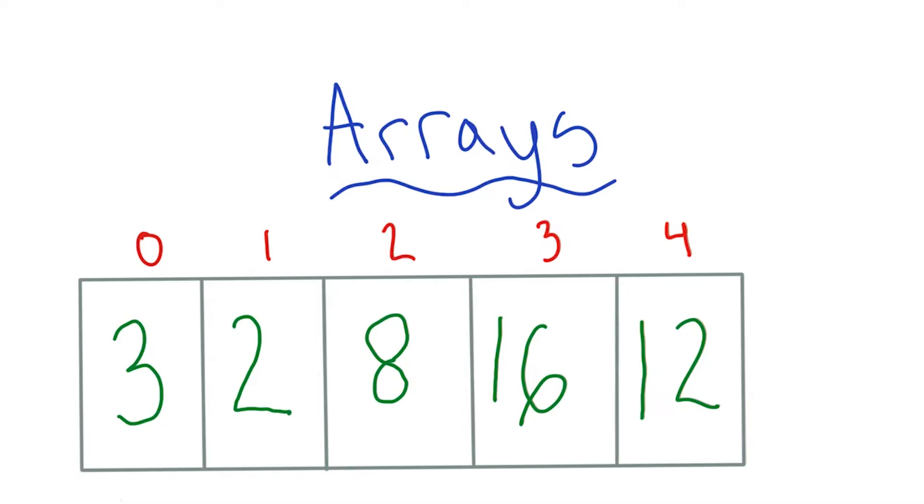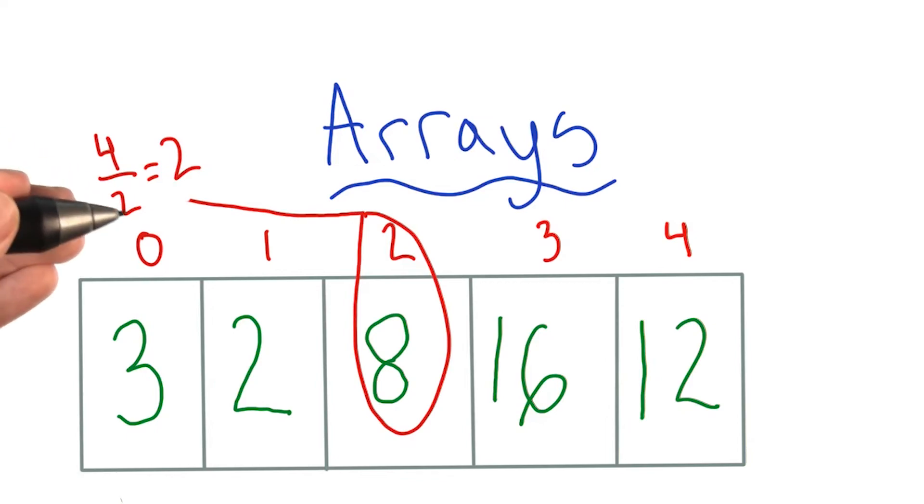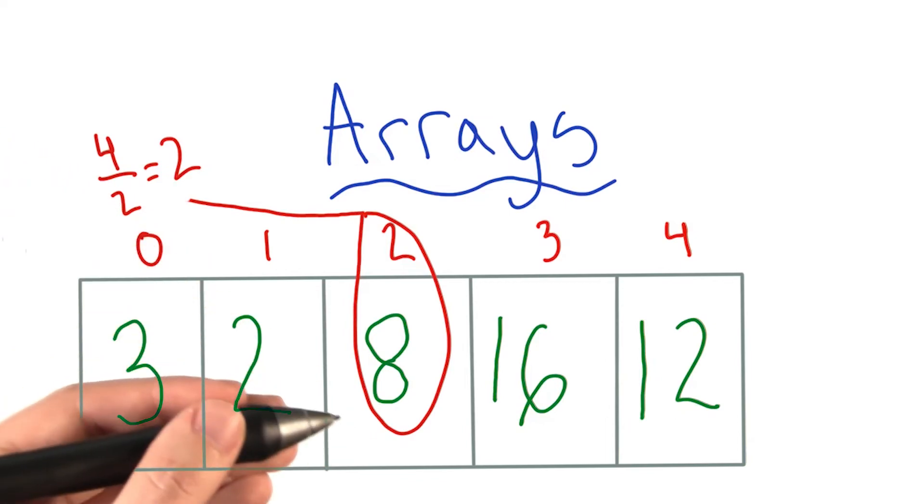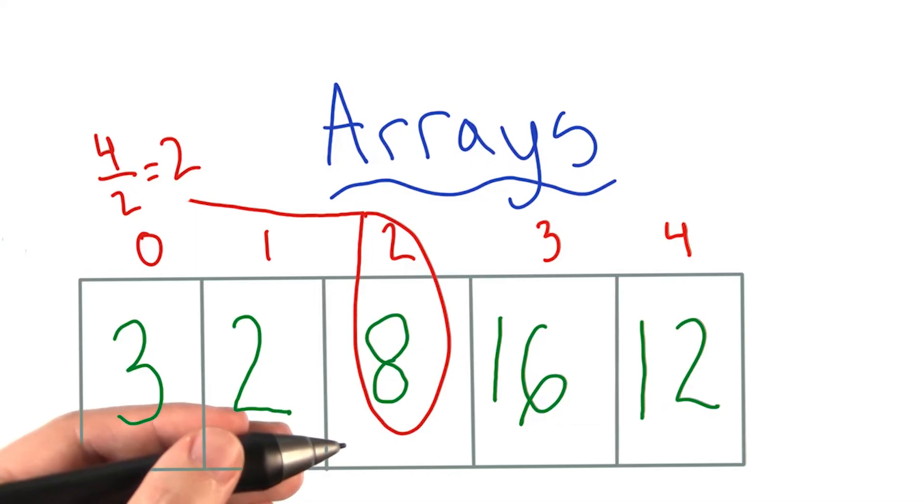If you need to access a certain location in the middle frequently, using an array can be a great choice. You just need to keep track of how long the array is, calculate the middle element, and check the object in the box with that index.